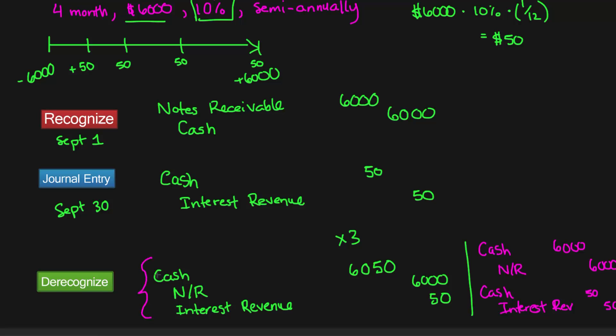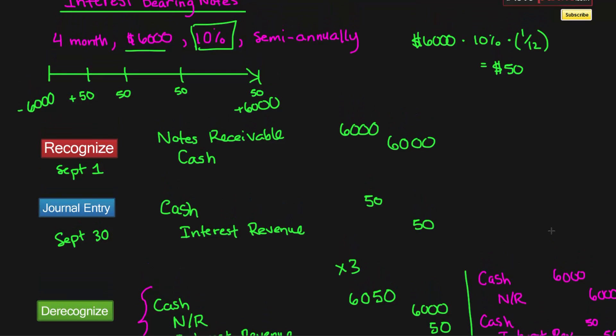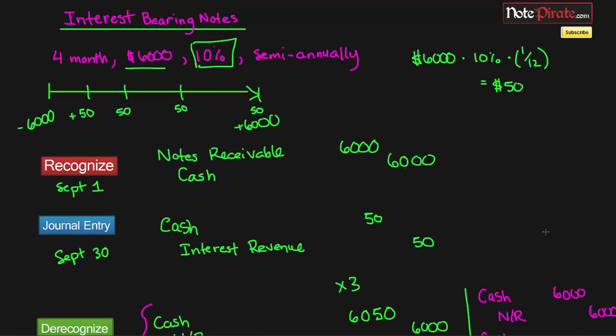It's just much more efficient to de-recognize all of the accounts together, and this is a more illustrative way of looking at it and trying to explain the concept to you. Hopefully you understood that. We're going to look at a non-interest-bearing note in the next one. I'll see you guys then.